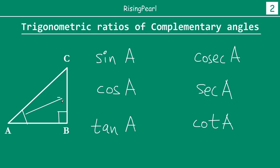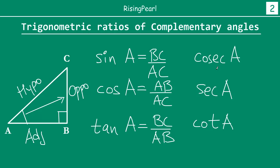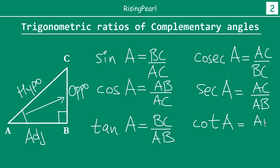Now if this is angle A, this is the opposite side BC, this is our hypotenuse — always the side opposite the 90 degree angle — and this is our adjacent side AB. So sine A is the opposite side BC divided by hypotenuse AC. Cos A is adjacent side AB divided by hypotenuse AC. Tan A is opposite side BC divided by adjacent side AB. For cosec A, sec A and cot A they are just the reciprocal of sine, cos and tan respectively. So cosec A will be AC by BC, sec A will be AC by AB, and cot A will be AB by BC.